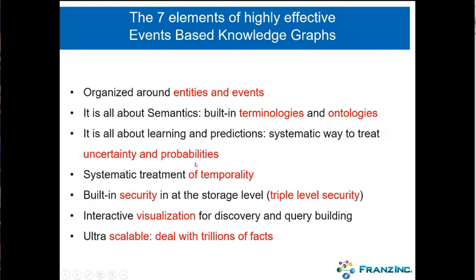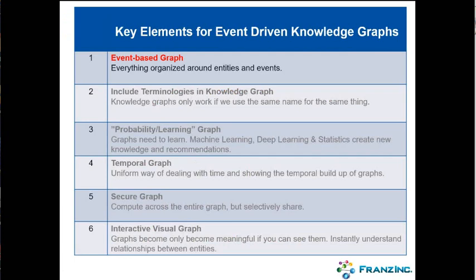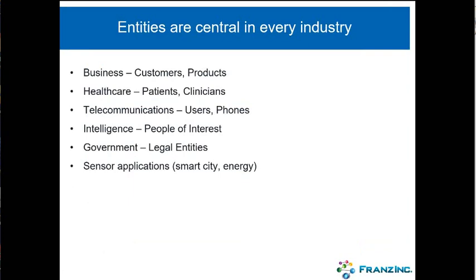Let me start with what we mean by an event-based graph and organizing everything around entities and events. You can imagine that almost anything in the enterprise can be turned into entities — a regular business has customers and products, healthcare has patients and clinicians. There's always an entity of interest in your particular enterprise and you want to do analytics over what these entities do. But it's really, really miserable with current systems because data is not modeled around entities — we use a very integrated model of tables and columns.